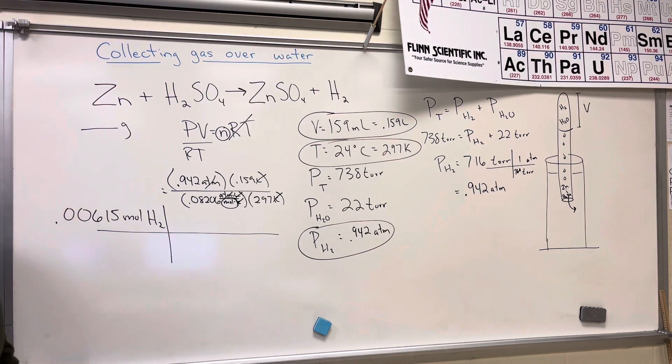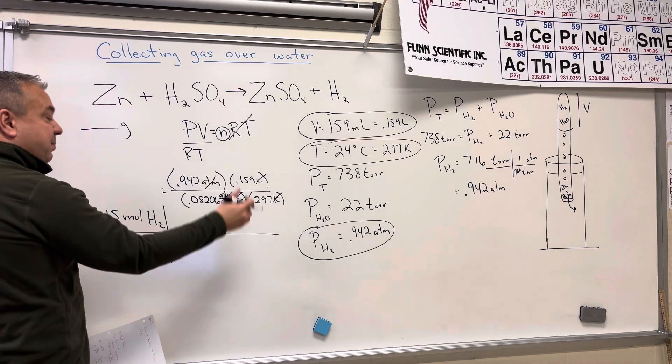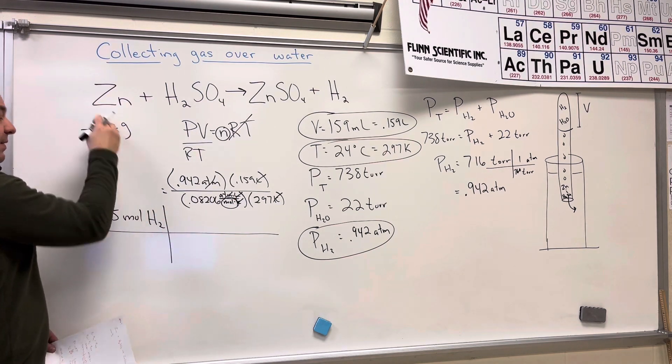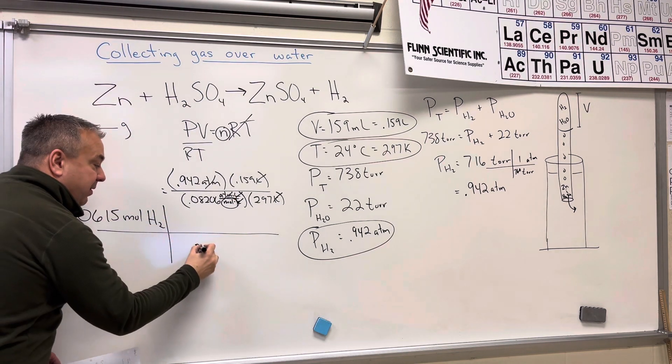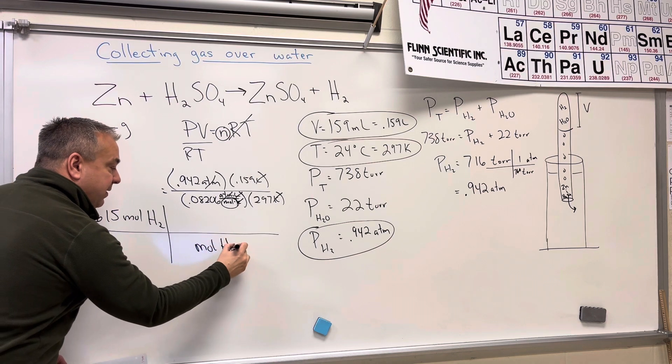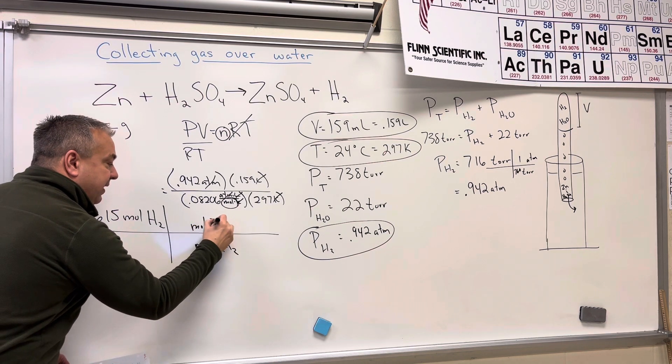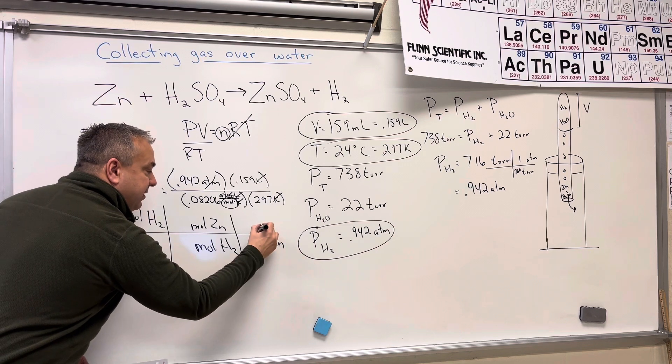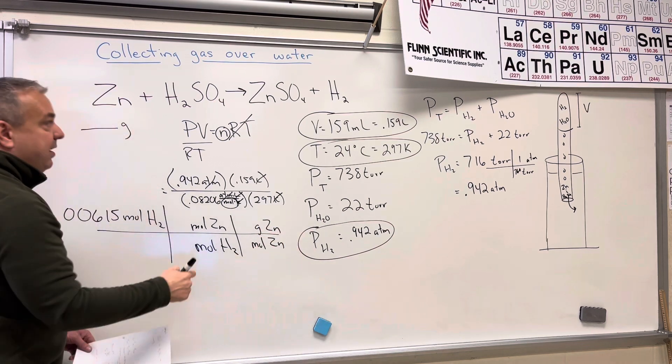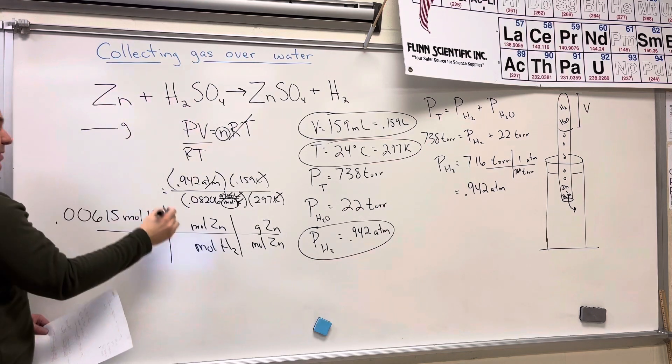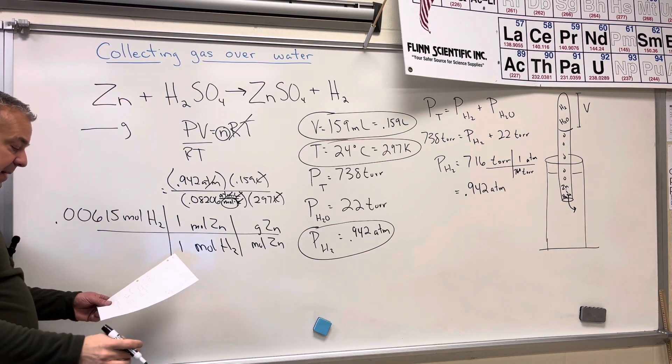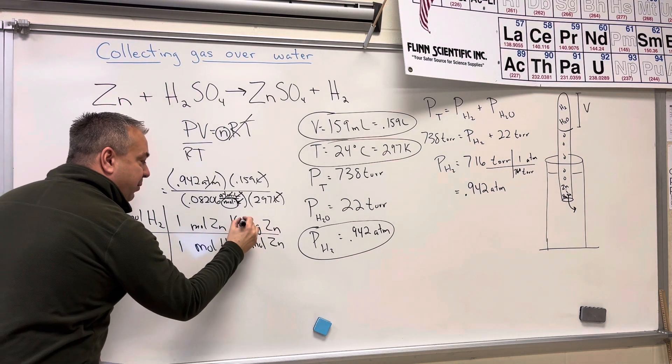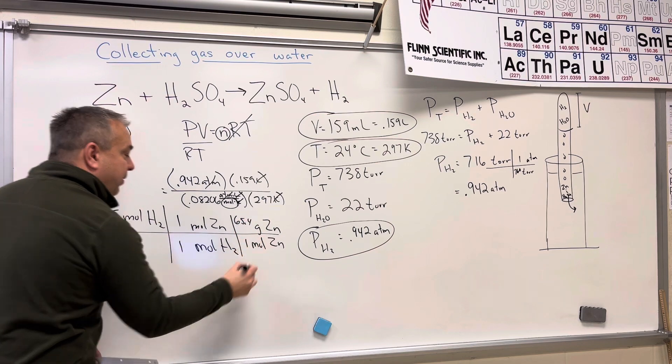And then I'm going to do some stoichiometry. I'm going to get these moles of hydrogen over to grams of zinc by doing the following: moles of hydrogen to moles of zinc, and then moles of zinc into grams of zinc. The mole to mole relationship is one to one. The molar mass of zinc is 65.4 grams per mole.